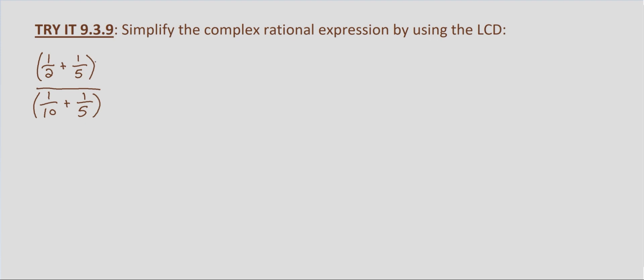What we want to do is find the least common denominator of all the rational expressions involved in our complex rational expression. Looking at 2, 5, 10, and 5, the least common denominator is going to be 10, since 2 times 5 is 10 and 5 times 2 is 10. So we will multiply the top and bottom by our LCD, which is 10 over 10.